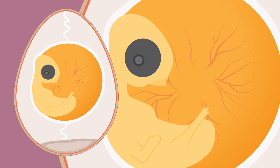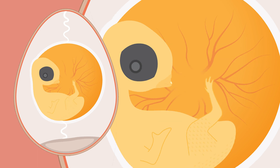Day 7: egg tooth begins to appear, comb begins to develop, eyelid and limb movements begin. Day 8: feather tracks visible, first eyeball movement, mineralization of bones, upper and lower beak equal in length.